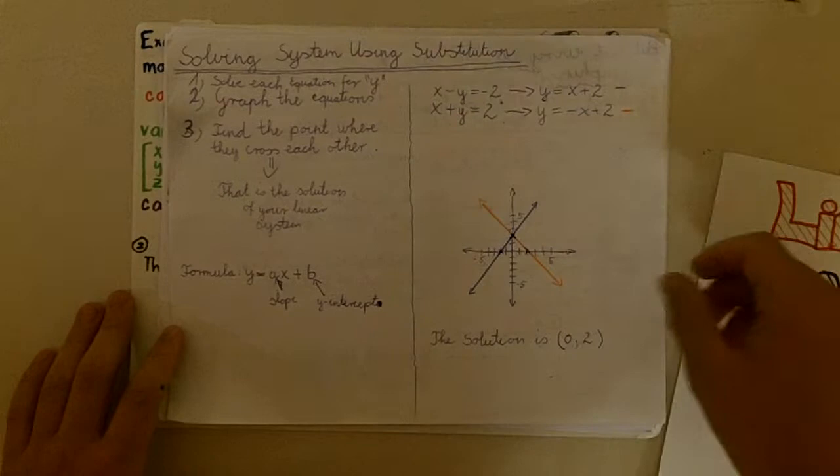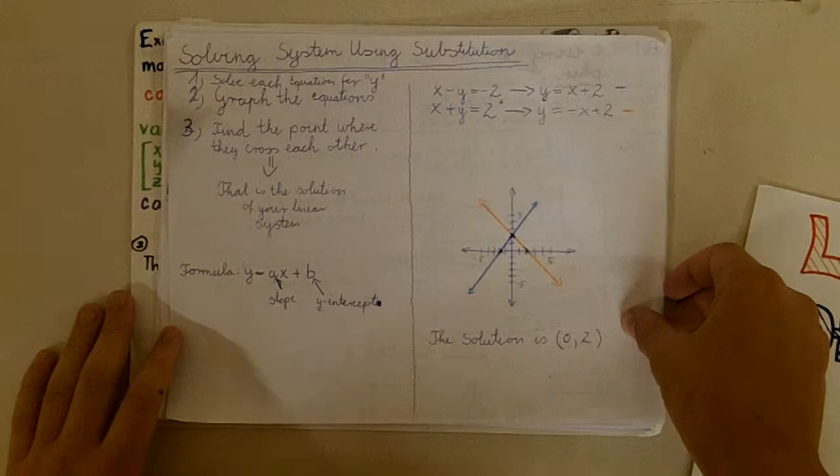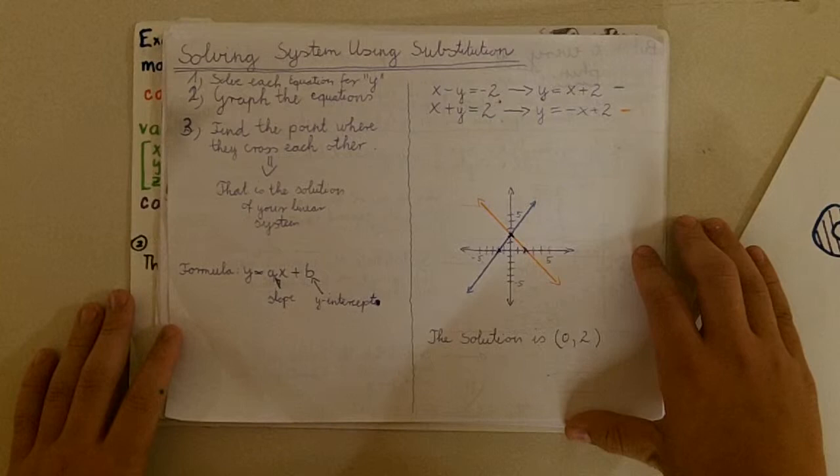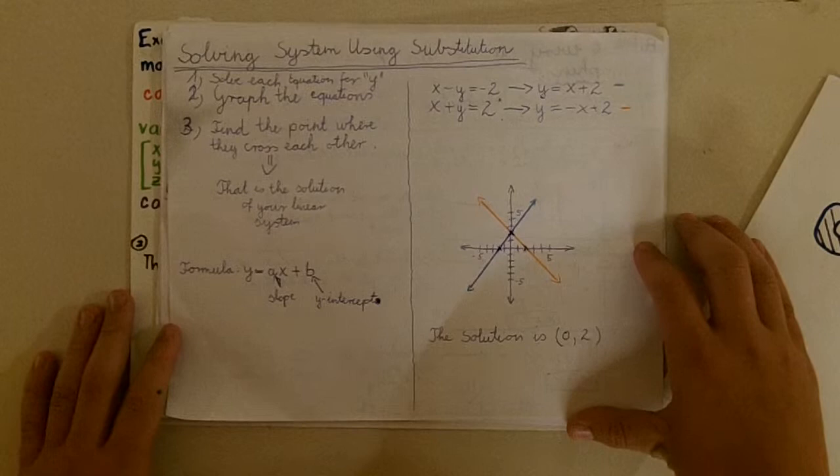The first step, you're going to solve each equation for y. Then you're going to graph the equations, and you're going to find the point where they cross each other — that's going to be the solution to your system. The formula you want to get it in is y equals ax plus b, which is slope-intercept form, where a is the slope and b is the y-intercept.